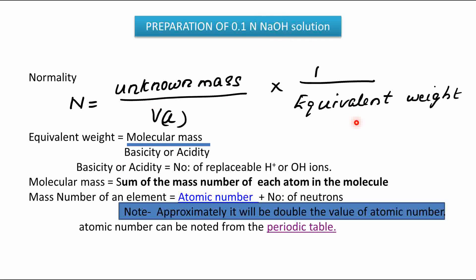From this equation, we also need to know how to find equivalent weight. The equation for equivalent weight is molecular mass divided by basicity or acidity. Basicity or acidity is the number of replaceable H⁺ or OH⁻ ions. For NaOH, only one OH⁻ is present, so its basicity is one.